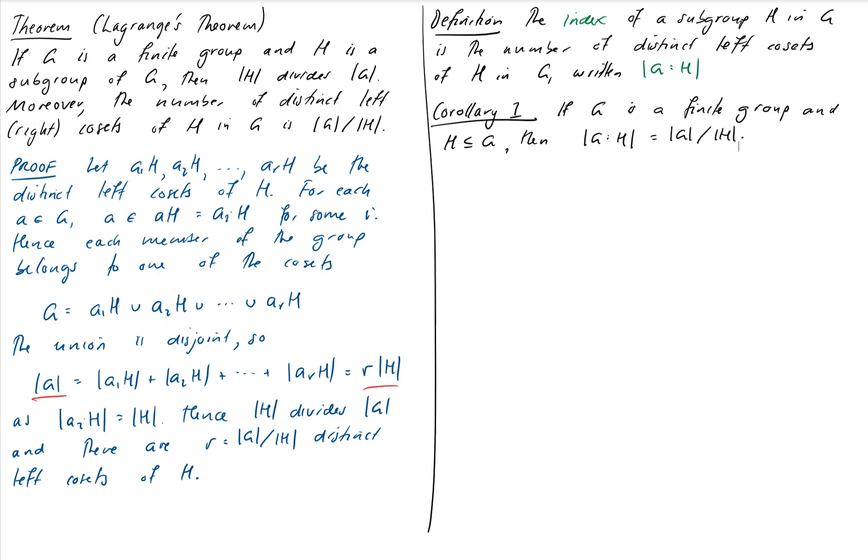Our first corollary to Lagrange's theorem just basically takes the index when G is finite, then basically the index just becomes what was stated in Lagrange's theorem. So the index works for groups that are not finite also, but when the group is finite, then Lagrange's theorem applies, and the index of H in G is just the order of G divided by the order of H. Not a huge amount to say there, it's just restating it in slightly different language.